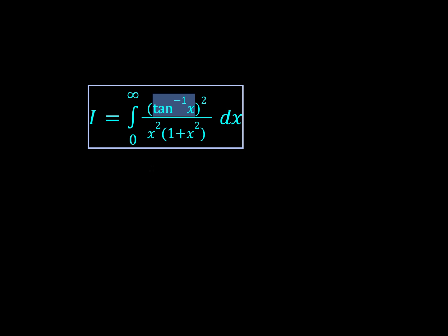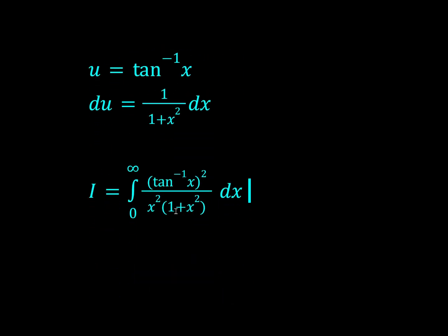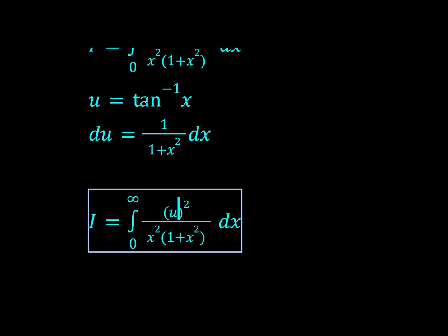We're going to let u equal inverse tan x, that's pretty obvious because the differential element will be 1 over 1 plus x squared dx. So we can replace this with u, and since u is tan inverse x, x is going to be tan u, so this at the bottom will be tan squared u, and then this 1 over 1 plus x squared dx will just become du.